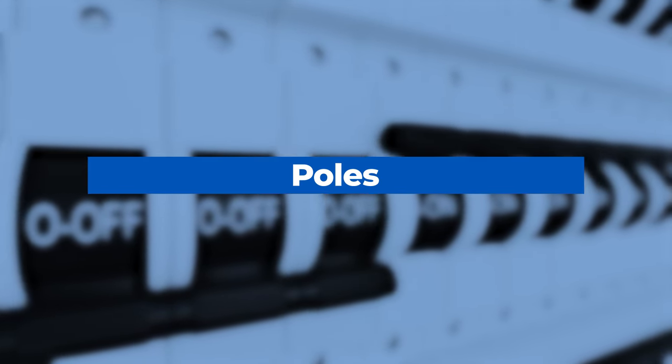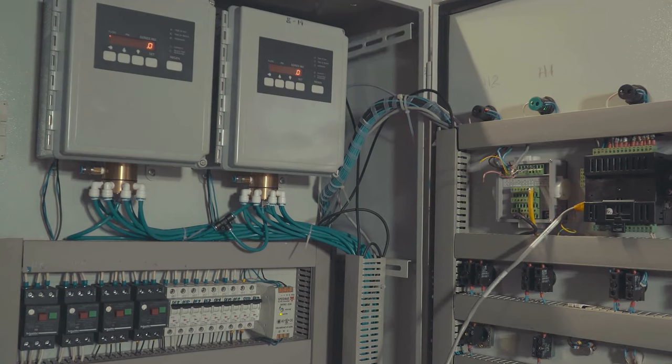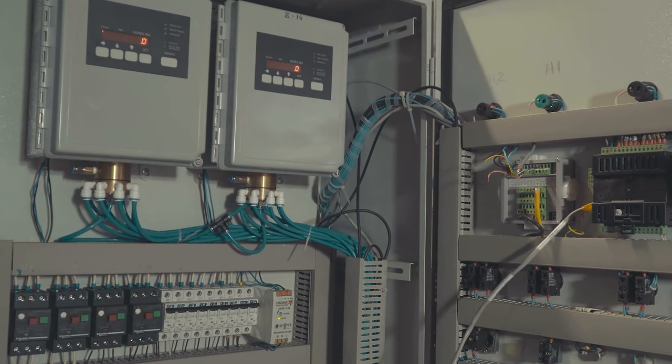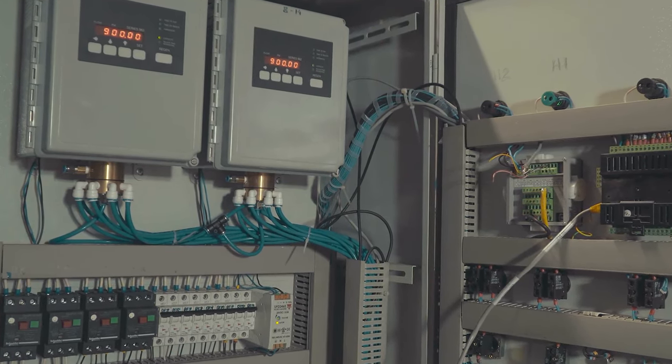Next, let's review poles. The number of poles determines how many completely separate circuits can be simultaneously protected by a circuit breaker.